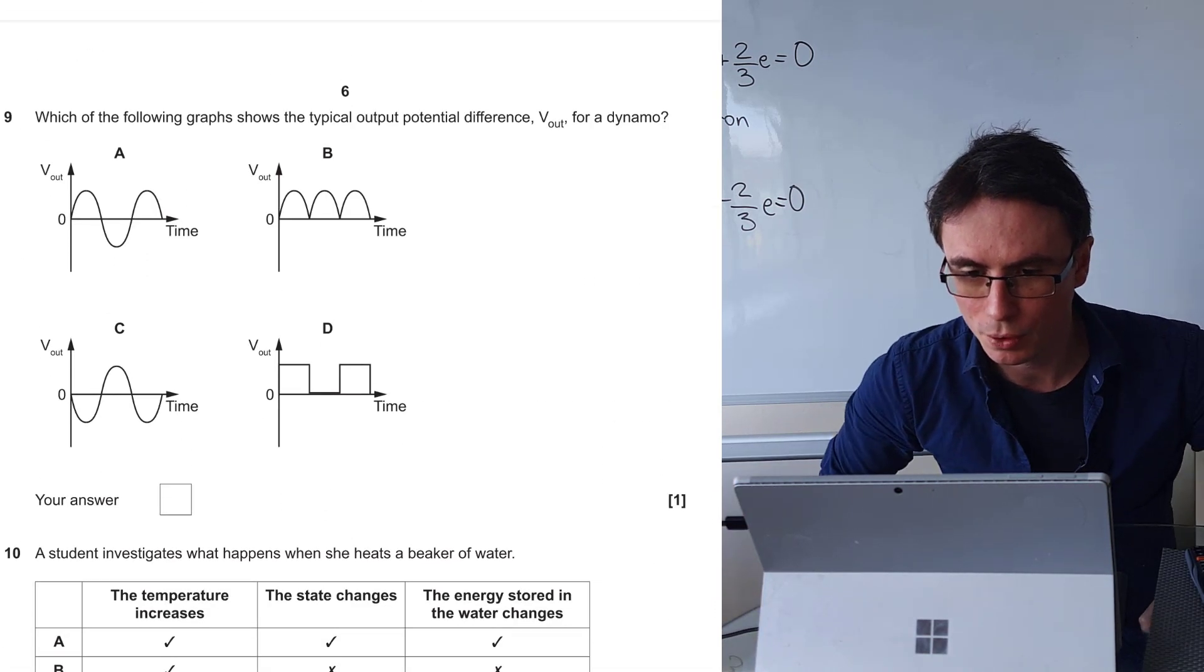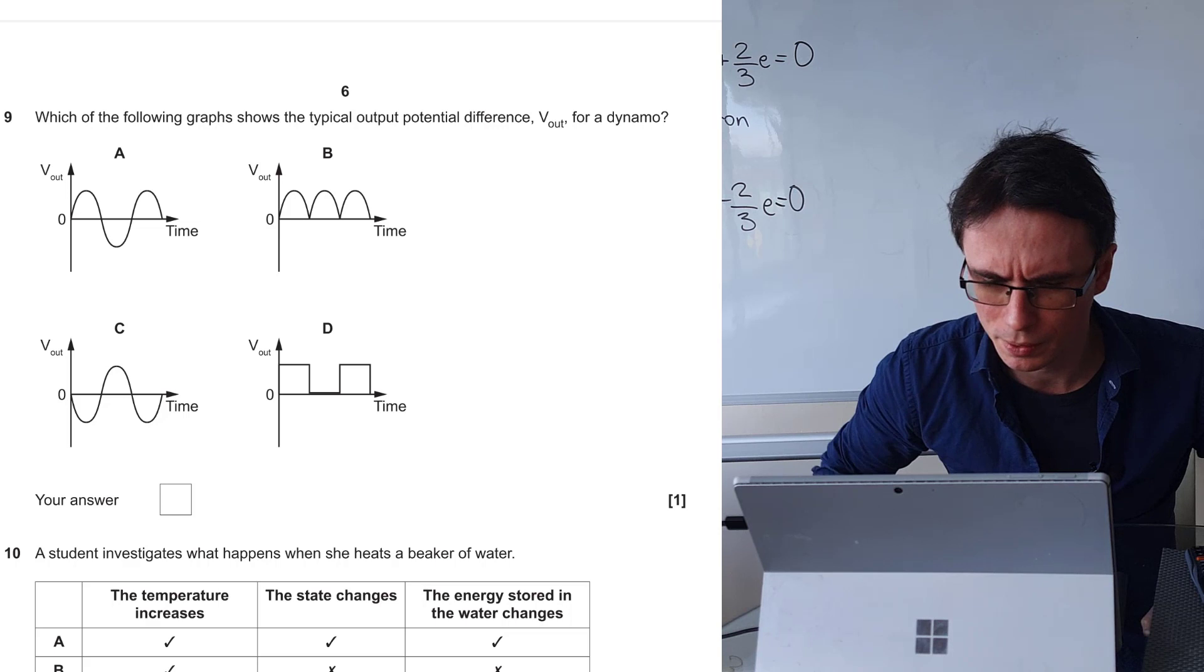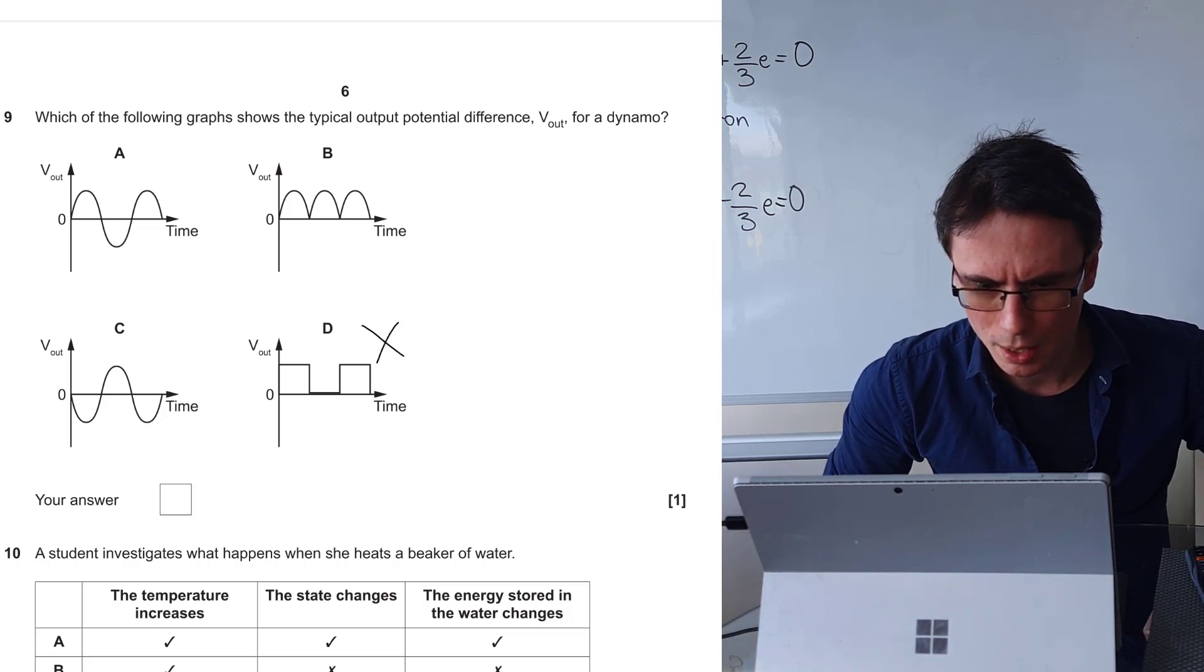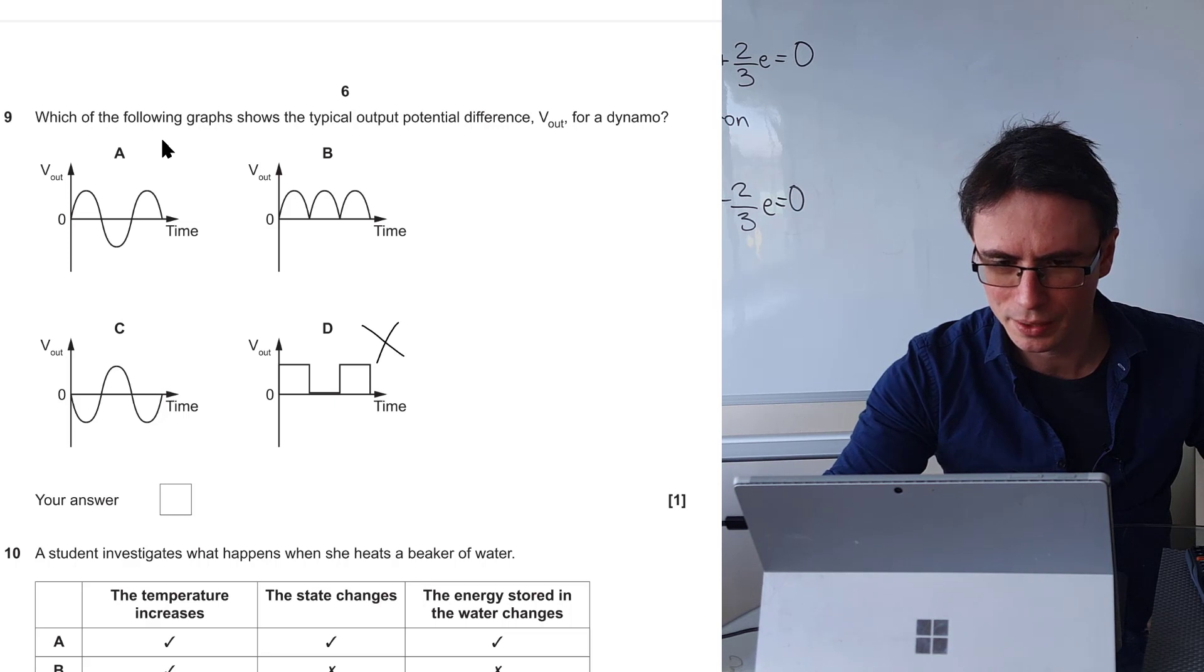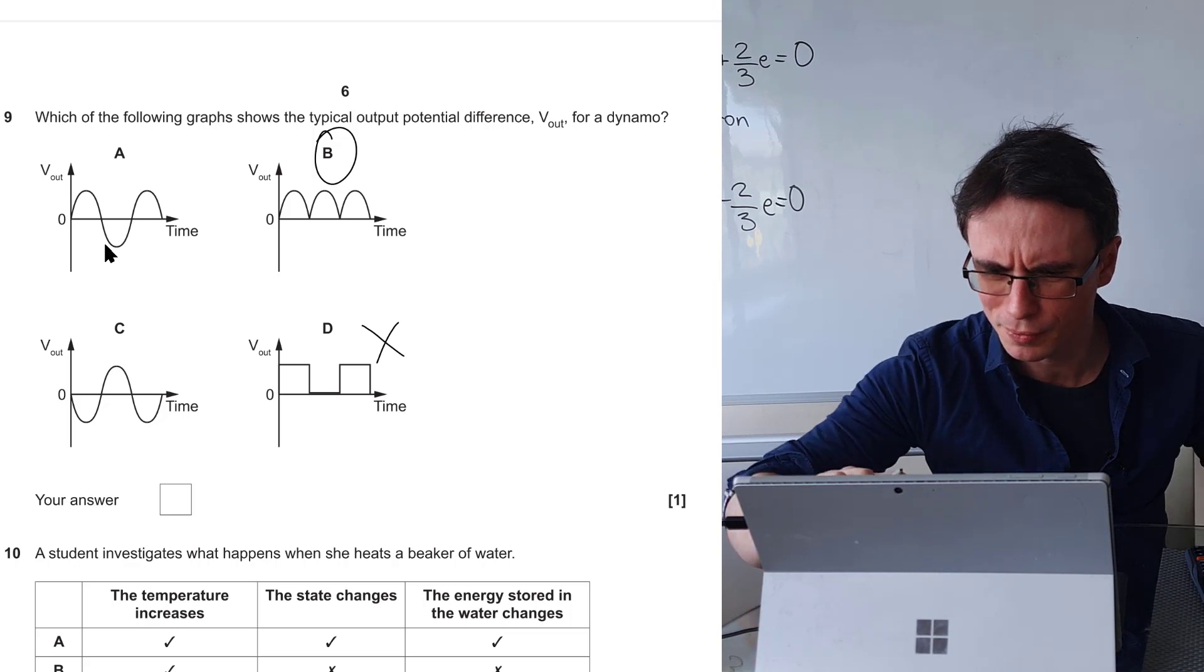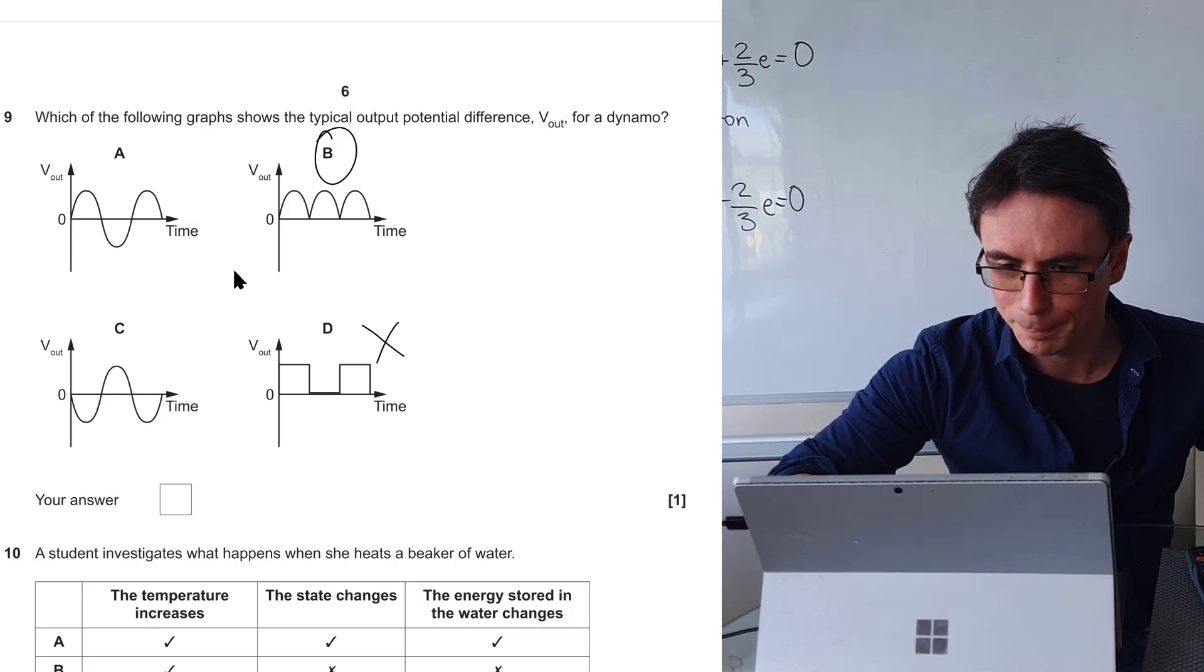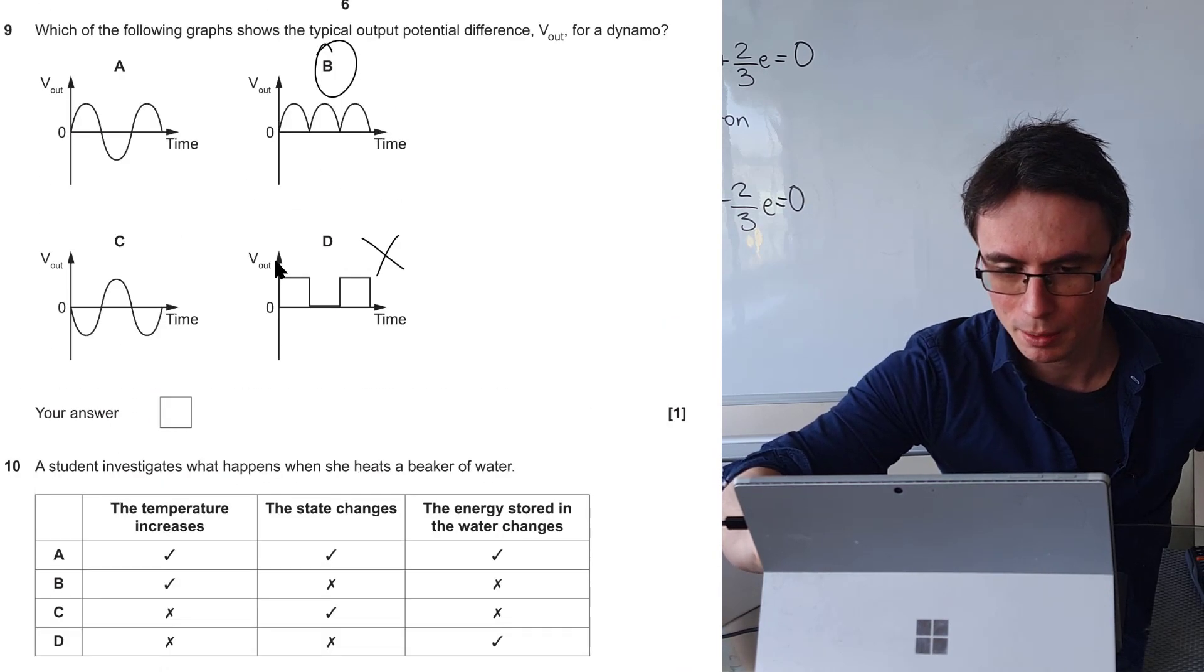Which of the following graphs shows the typical output for a dynamo? This one here is interesting. It's definitely not D, it's not the square voltage. We wouldn't be able to differentiate between A and B because the only difference is just the sign, the initial position. The correct answer will be B. I'm pretty sure, even though I've not actually looked at dynamos for a while, that their output is producing a voltage with only one sign. Final answer B.